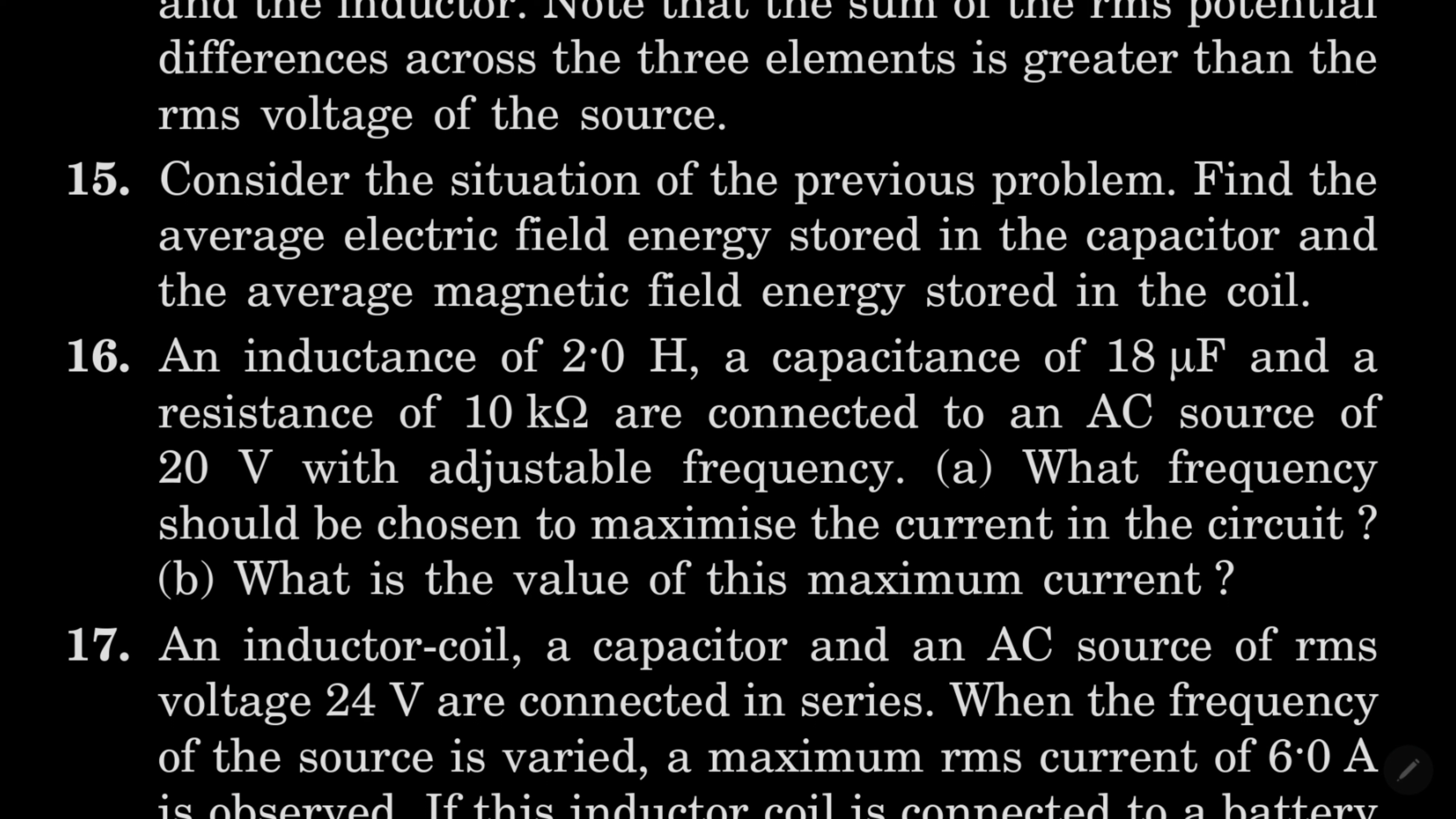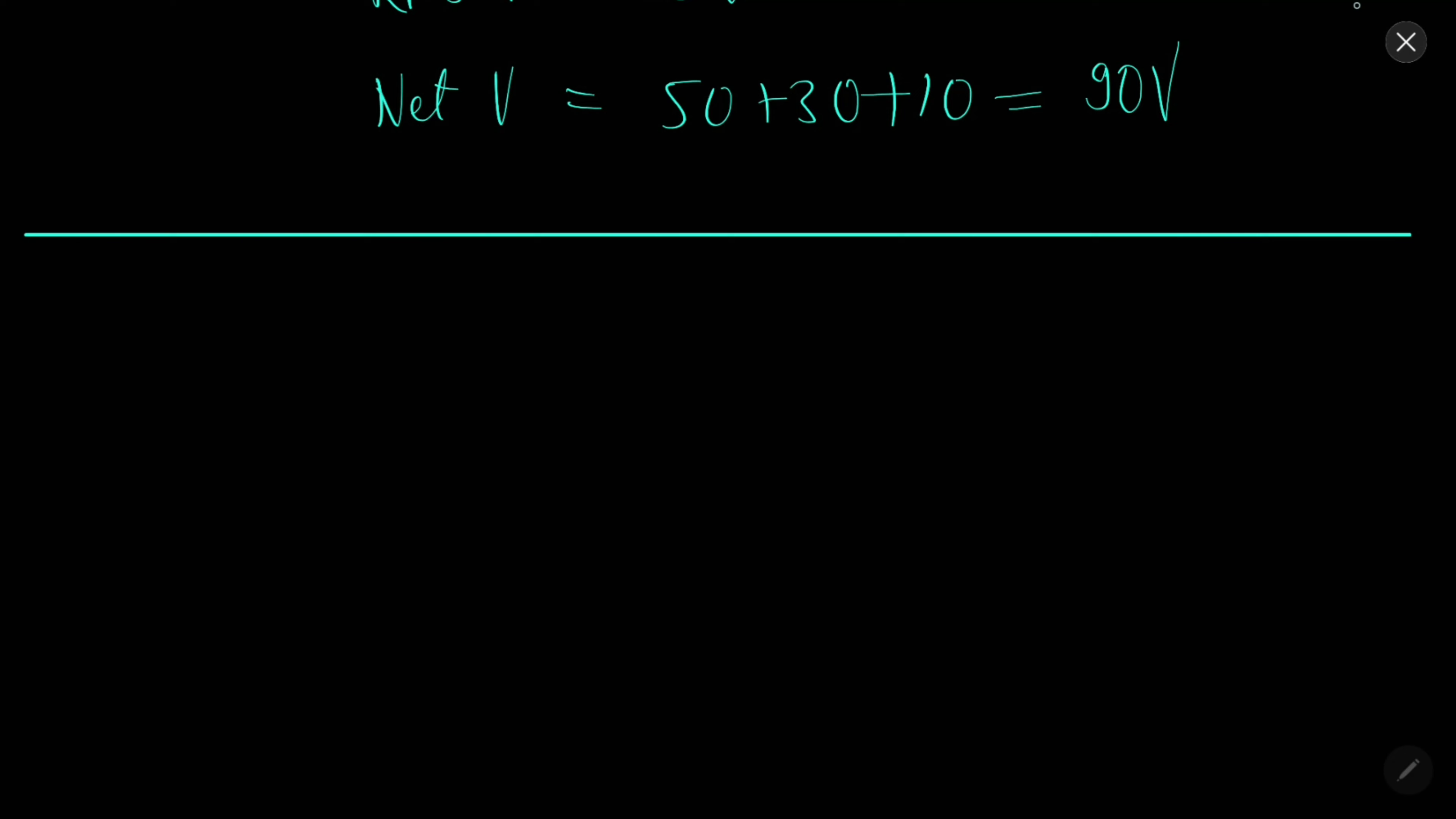In 15, find the average electric field energy stored in the capacitor and magnetic field energy stored in the coil, that is inductor. Solution 15: The energy stored in the capacitor will be half CV square and magnetic energy stored in the inductor will be half LI₀ square. We can put the values: half times 20 times 10⁻⁶ times 50 square and half times 1 times 0.1 square. This will give us 25 mJ and this will give us 5 mJ.